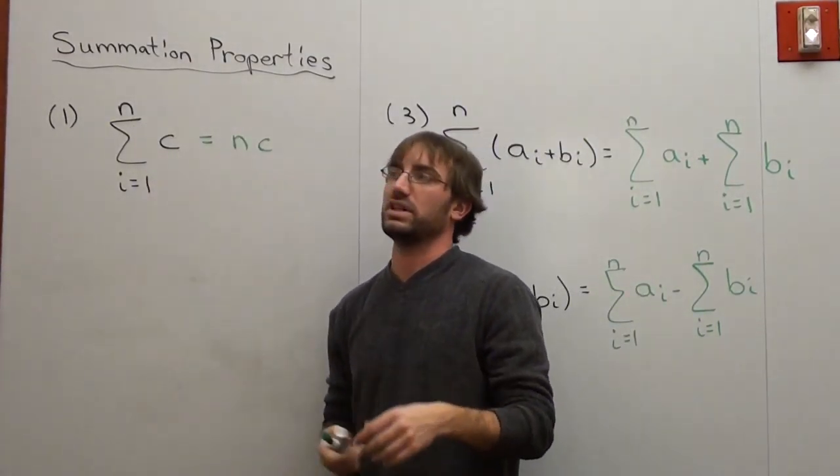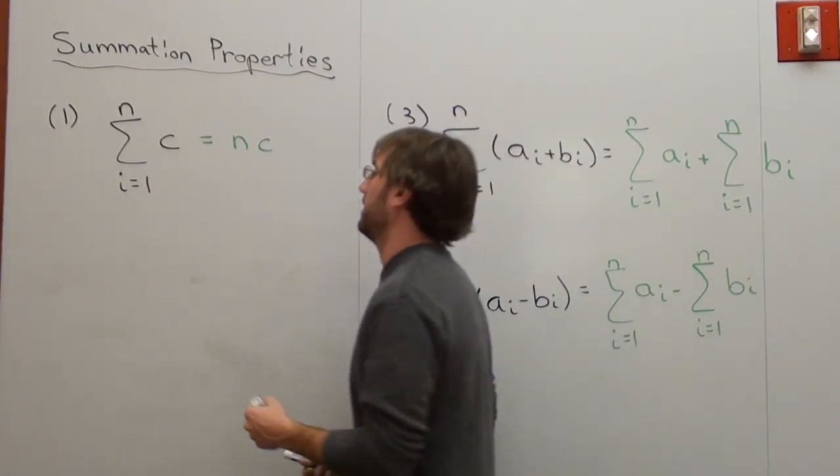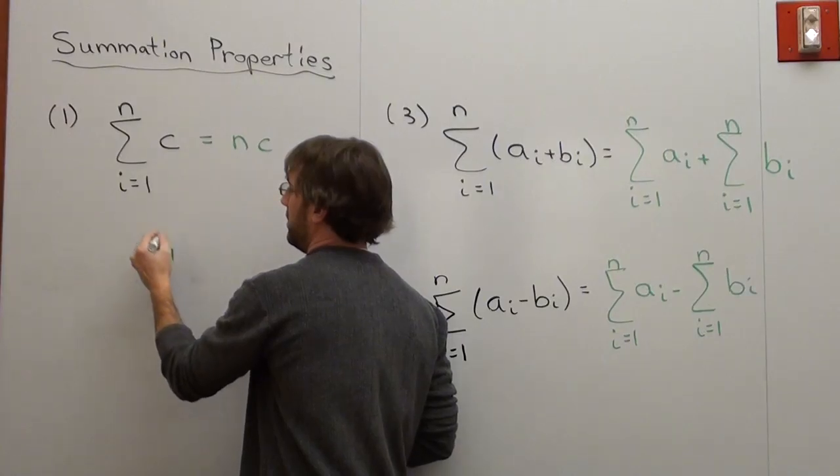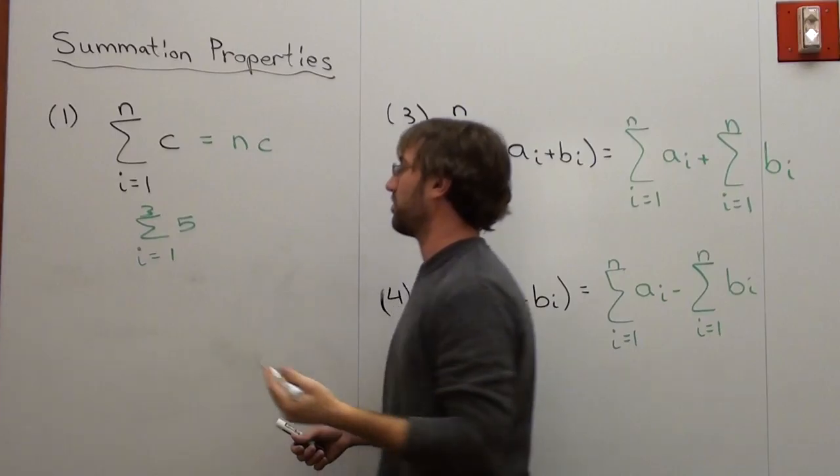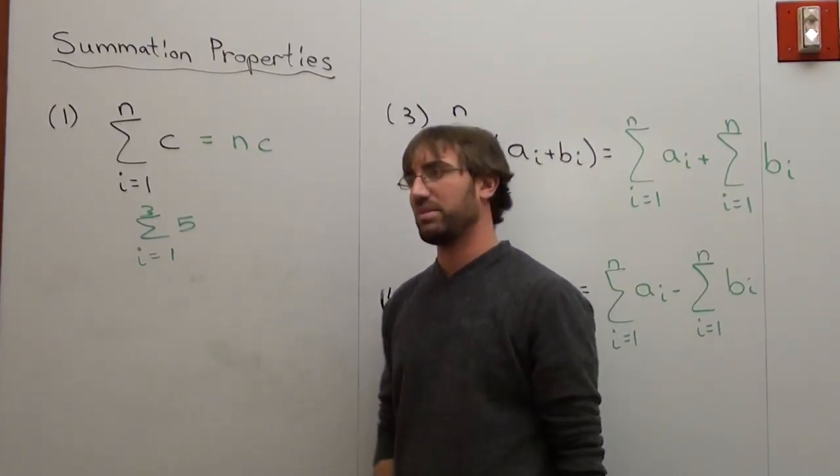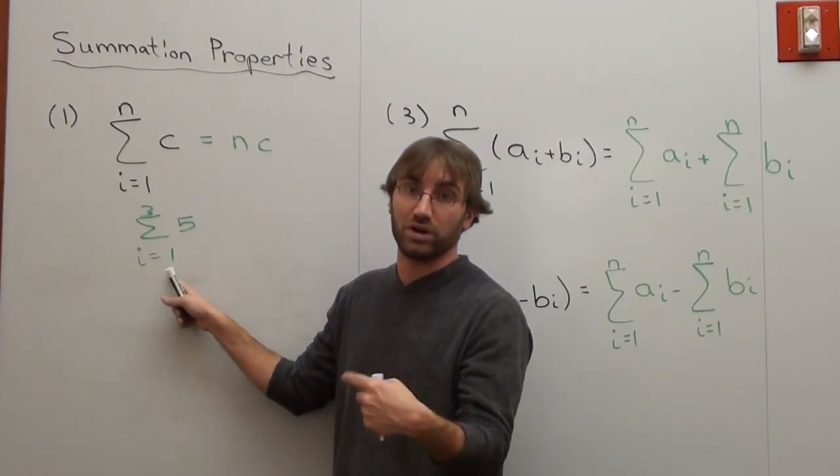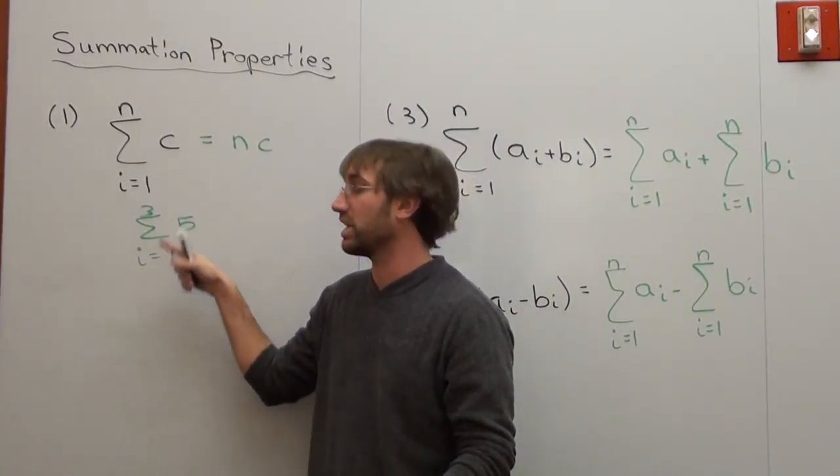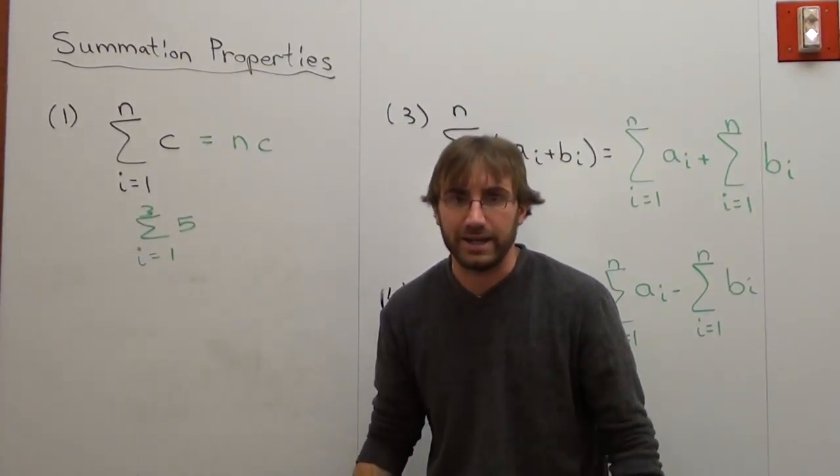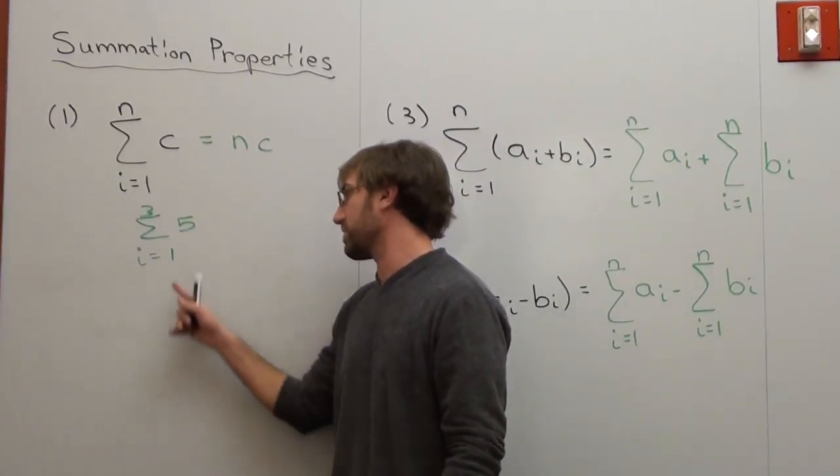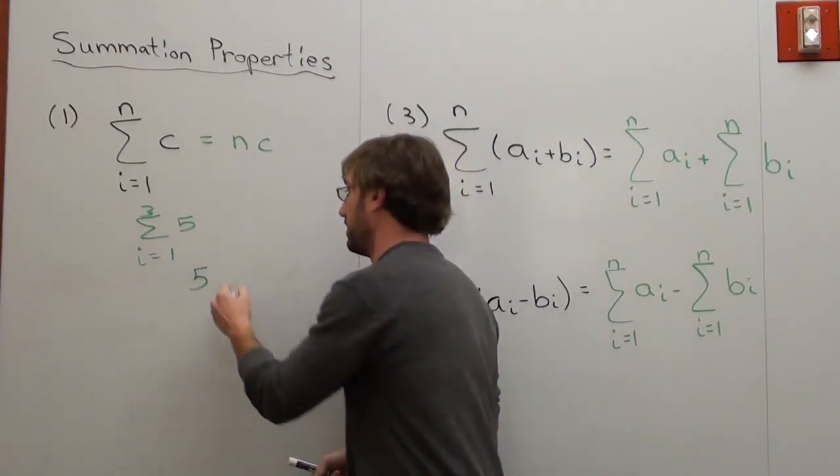So let me go ahead and kind of erase this so I have a little bit of room. And let's say you've got the summation of something from i equals 1 to n of c. Well, let's just put something there already so it actually kind of makes sense. Let's say I'm going i equals 1 up to 3 and I've got the number 5. What that basically means is this. I've got to plug in the number i, sorry, plug in the number 1 or substitute in the number 1. Then I've got to substitute in 2. Then I've got to substitute in 3. All the way up to 3.